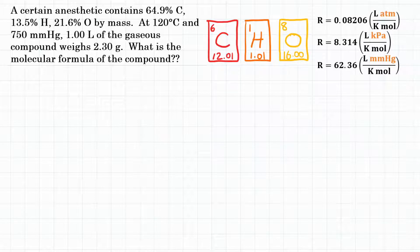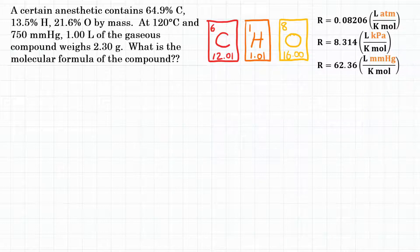The problem states: a certain anesthetic contains 64.9% carbon, 13.5% hydrogen, and 21.6% oxygen by mass. At 120 degrees Celsius and 750 millimeters of mercury, 1.00 liters of the gaseous compound weighs 2.30 grams. What is the molecular formula of the compound?